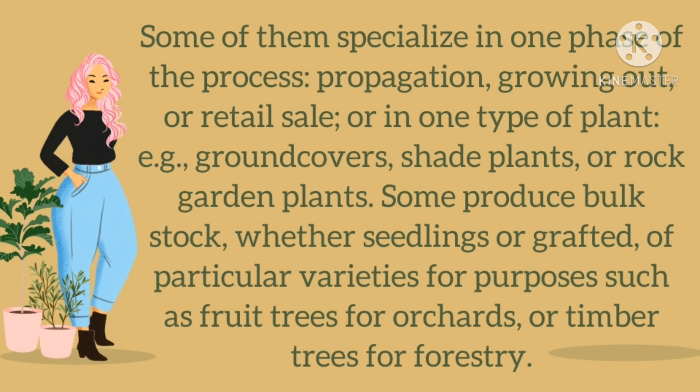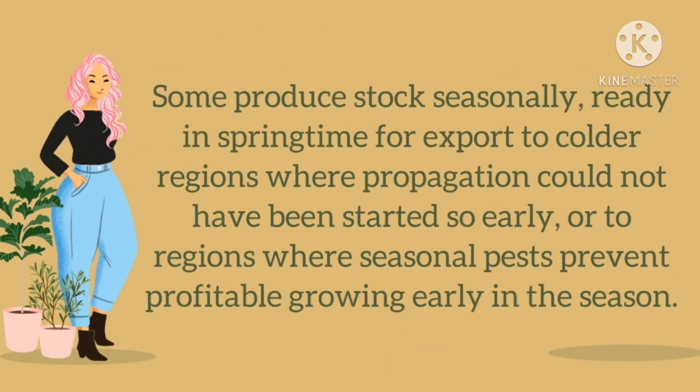Now let us talk about the functions of a nursery. Some nurseries specialize in one phase of the process — either propagation, growing out, or retail sale — or in one type of plant, such as ground covers, shade plants, or rock garden plants. Some produce bulk stock, whether seedlings or grafted, of particular varieties for purposes such as fruit trees for orchards or timber trees for forestry. Some produce stock seasonally, ready in springtime for export to colder regions where propagation could not have been started so early, or to regions where seasonal pests prevent profitable growing early in the season.